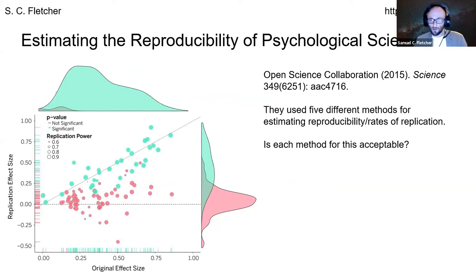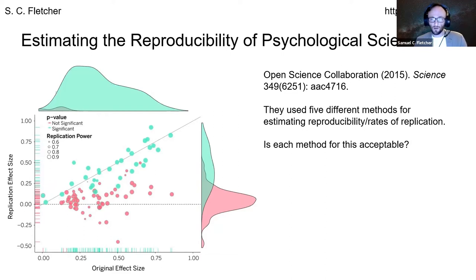My intention is not to pick on or particularly criticize the Open Science Collaboration. My reading of their intention is that they had selected methods that are used in different parts of the replication community. So I take this to be more of a criticism of the general frameworks that the community has often adopted for trying to assess rates of replication. I'll have one method that I want to argue is probably best adapted to our interests.